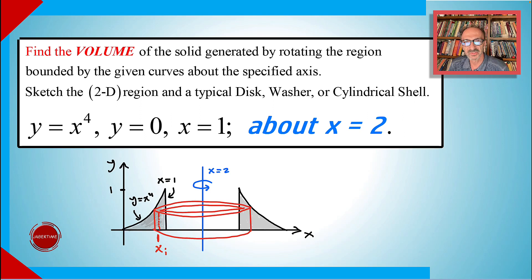Find the volume of the solid generated by rotating the region bounded by the given curves about the specified axis and sketch the 2-D region and a typical disk, washer, or cylindrical shell. y equals x to the 4, y equals 0, and x equals 1, about x equals 2.